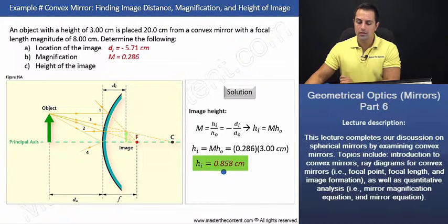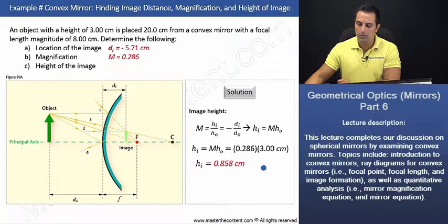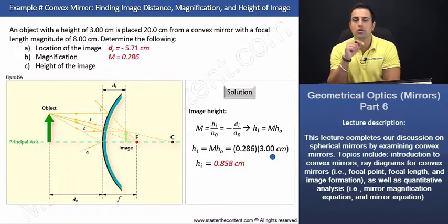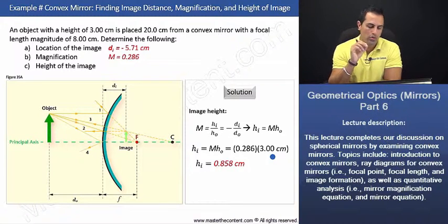And as we had anticipated, the height of the image, which is 0.858 cm, is less than the height of the object, which was 3 cm. Let's proceed to our next slide where we can do one more example.